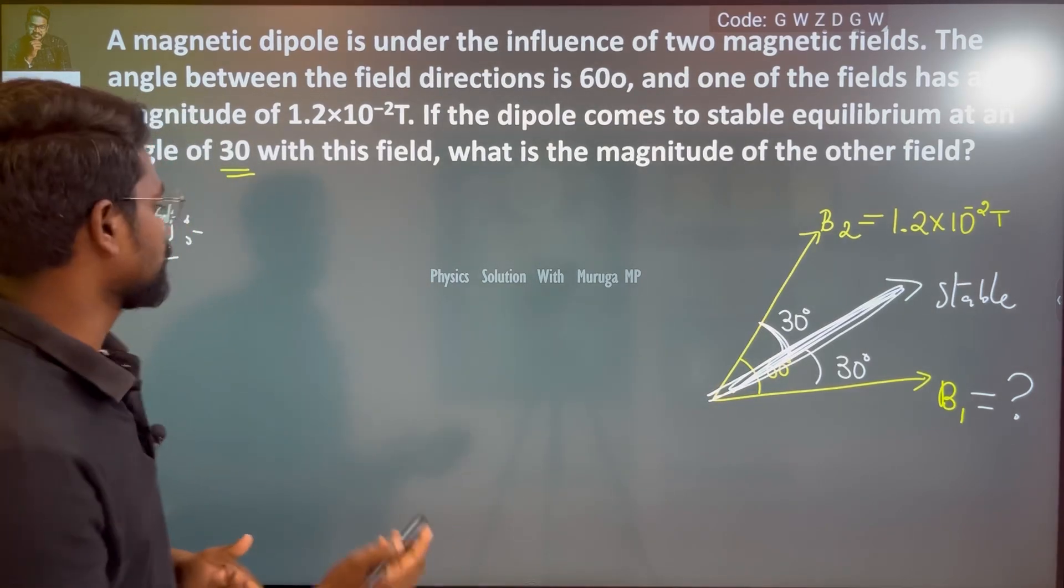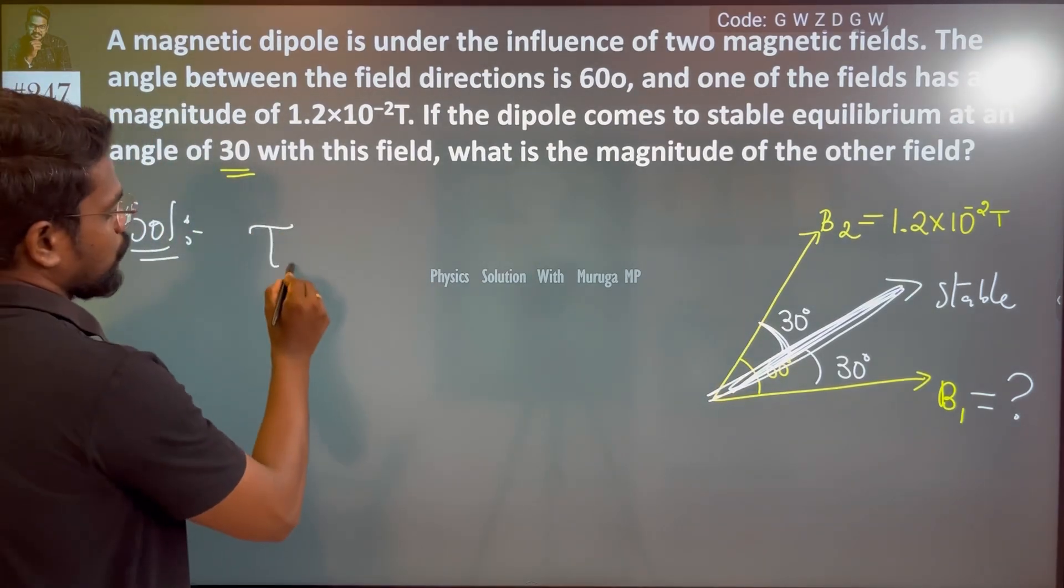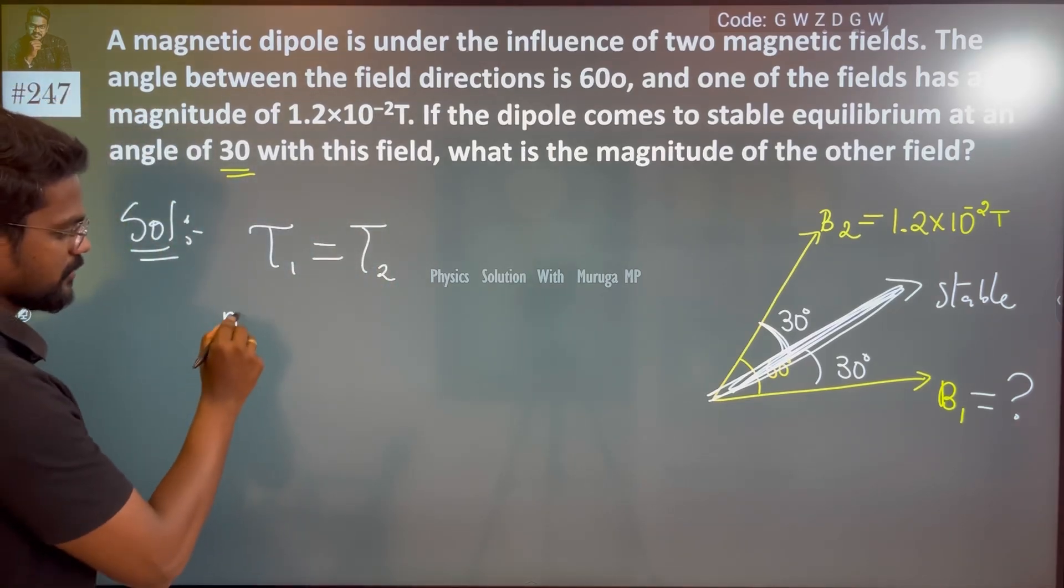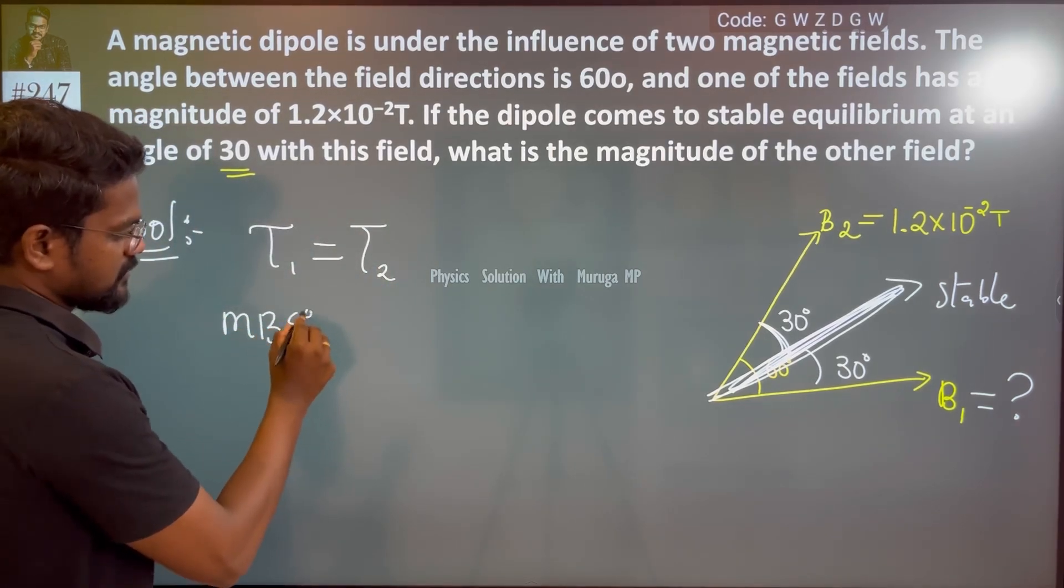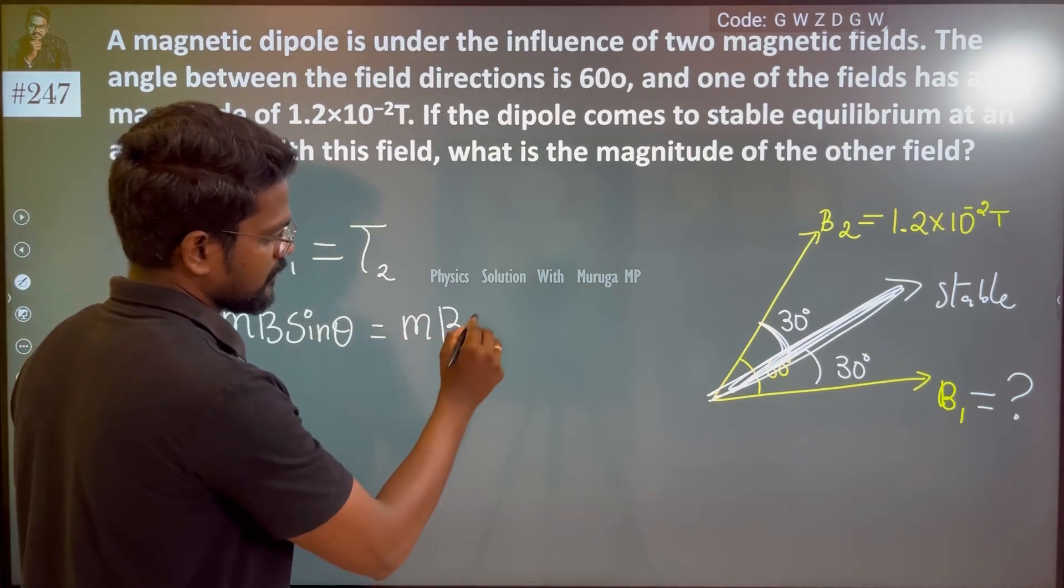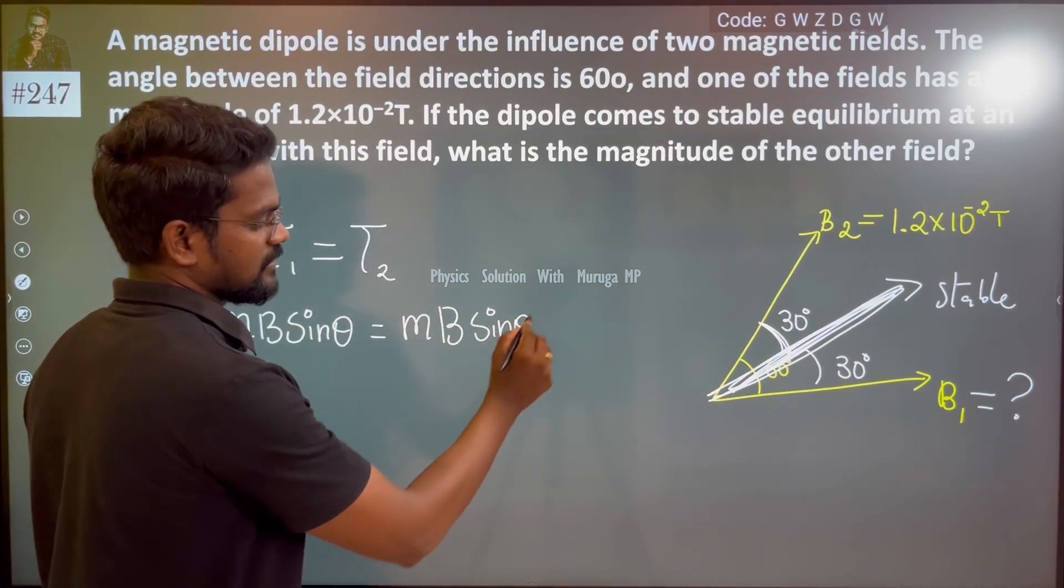So I can say torque 1 equals torque 2, which is nothing but MB sin theta equals MB sin theta. Here theta is 30 degrees for one of them.